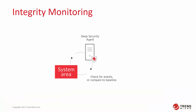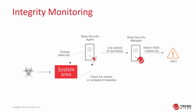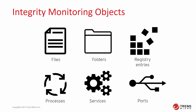The Integrity Monitoring Protection module detects changes by comparing the current condition of the protected server to a baseline reading it has recorded previously. When changes occur to the system area, the Deep Security agent will detect the changes and upload the details to the Deep Security Manager on the next heartbeat. If alerts have been configured, an alert can be generated and sent to an administrator. The module can monitor system objects including files, folders, registry entries, processes, services, and listening ports.